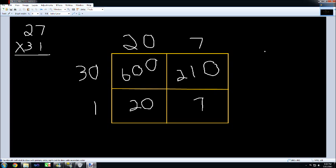So the first number we have is 600. Next number is 210. Remember to line up the numbers by their place value, so we've got ones, tens, hundreds. The next is 20, so the 2 will go into the tens column. And the last number we have is 7.